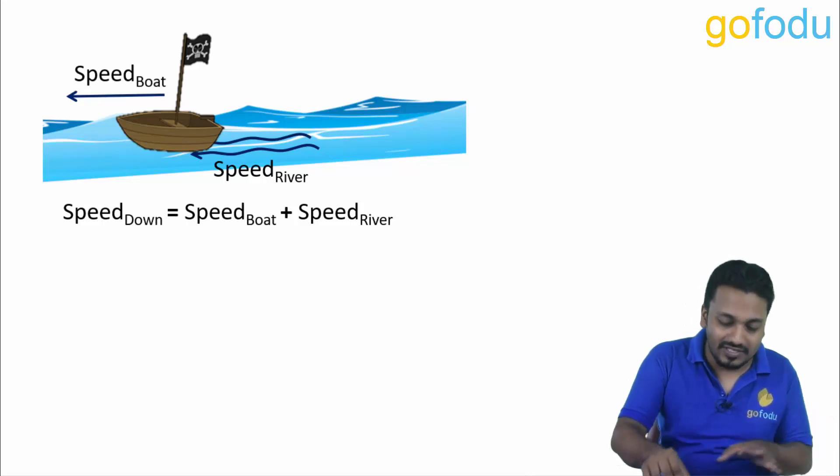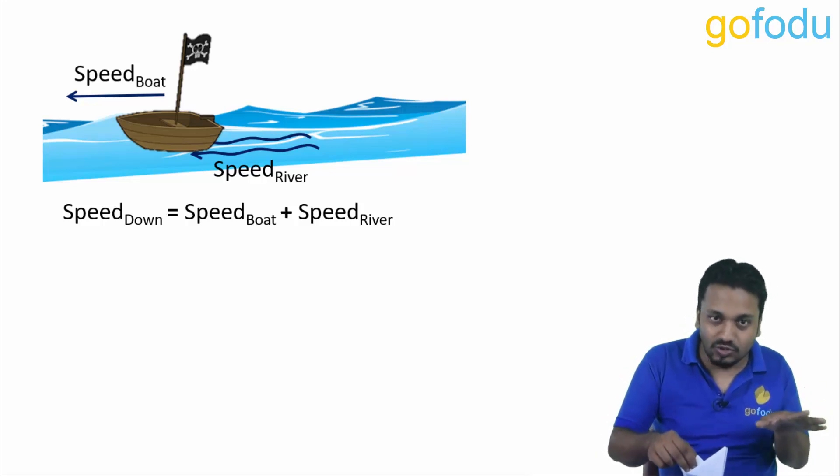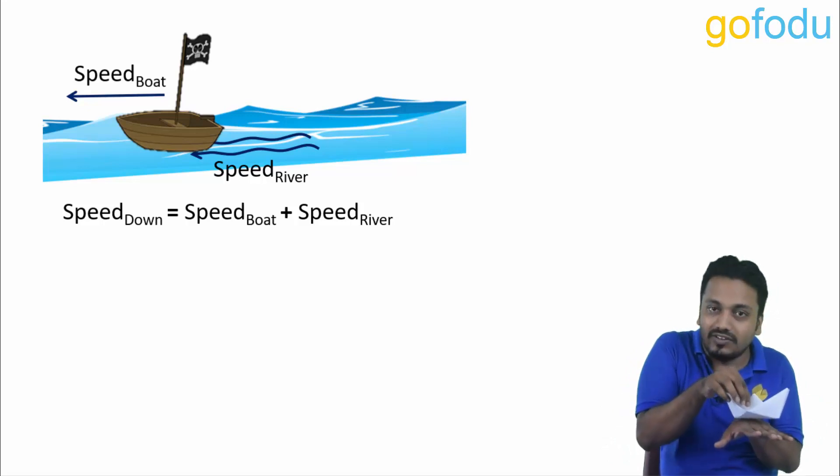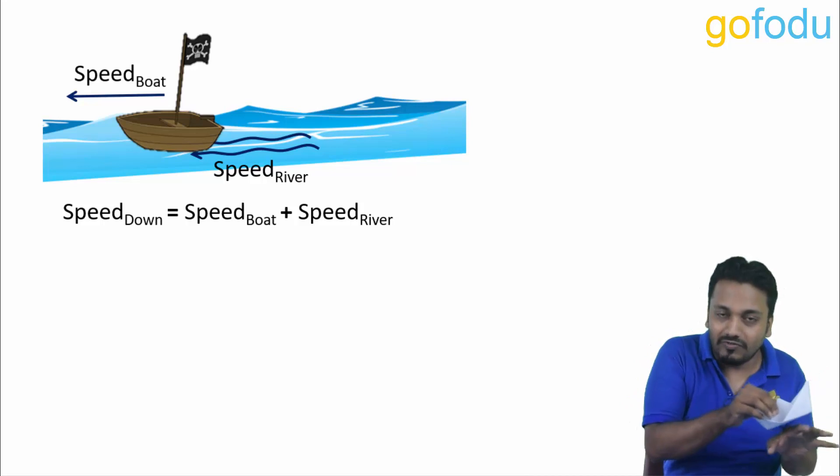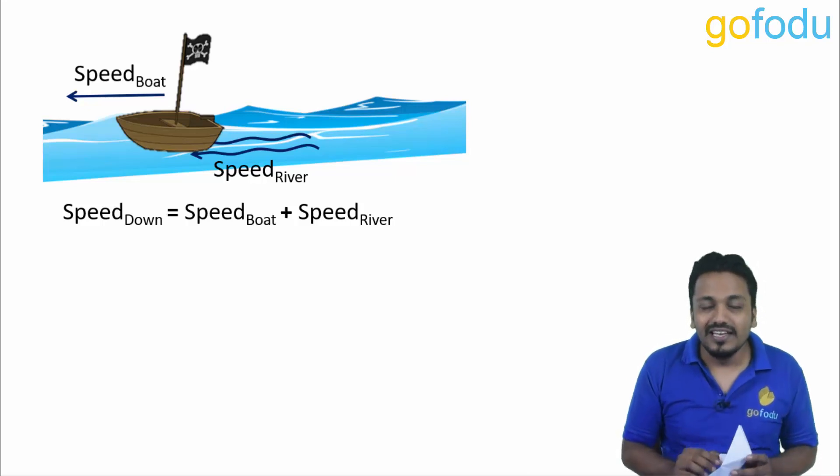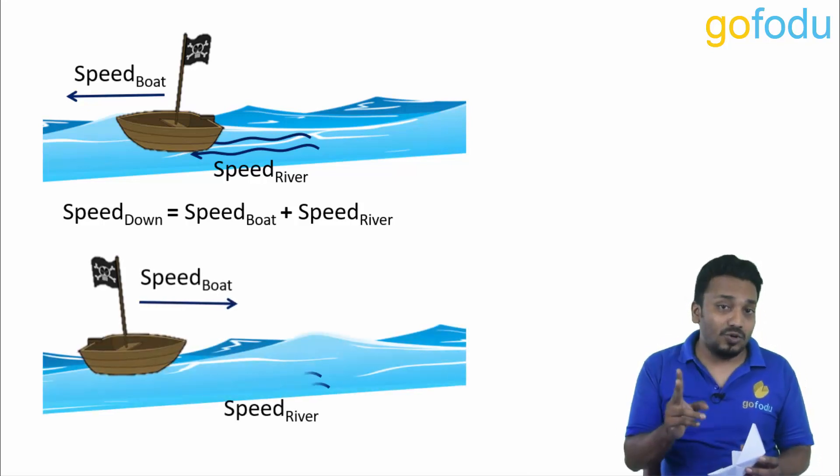Why will these speeds add up? Because the river is pushing the boat forward. The river is flowing with its own constant speed, the boat is rowing on the top of the river surface, so the river is pushing the boat forward with its own speed, so both the speeds will get added up.